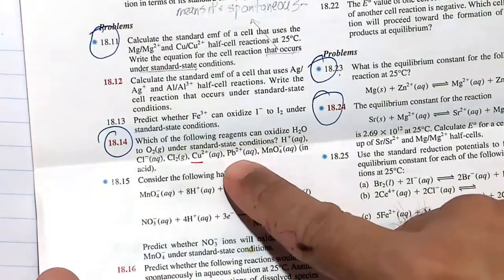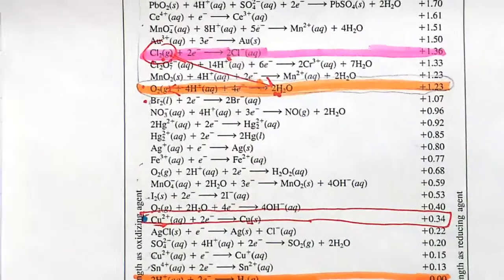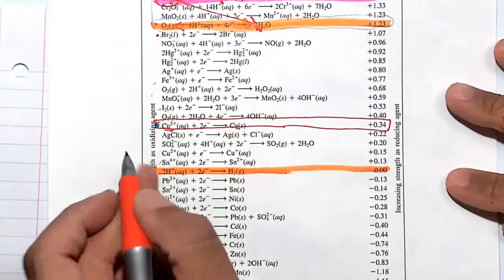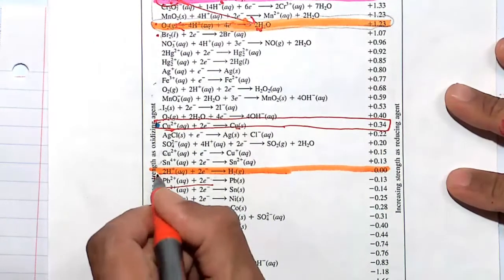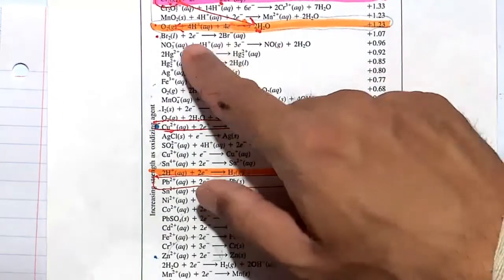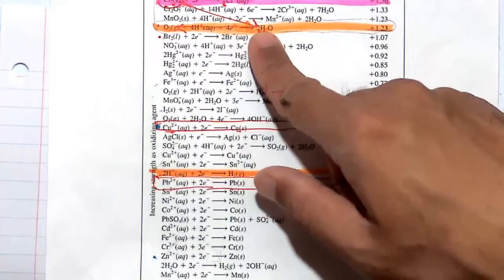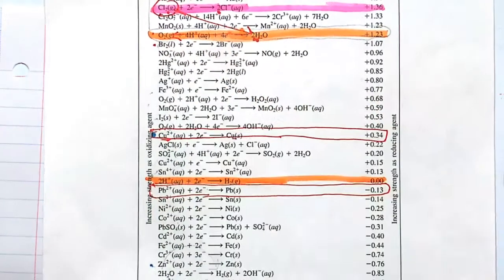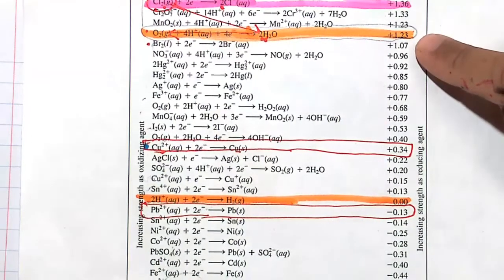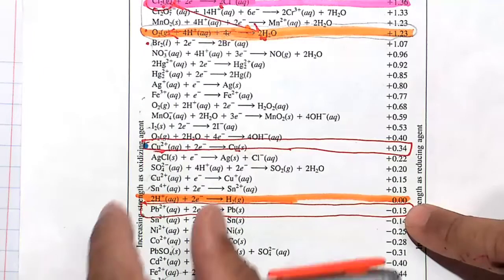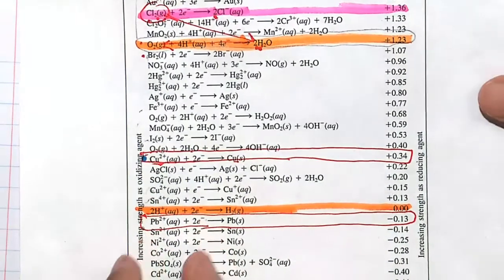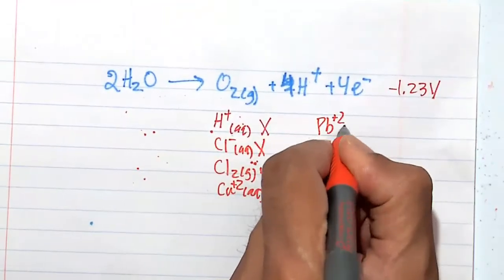Let's look at lead plus 2. Lead plus 2 is right here on the table — and no, lead plus 2 cannot oxidize or flip this reaction. For water to get oxidized and lose four electrons to become oxygen gas, that's minus 1.23 volts, and the minus 0.13 volts reduction potential for Pb²⁺ is not enough to maintain a positive E value. So Pb²⁺ is a big no.